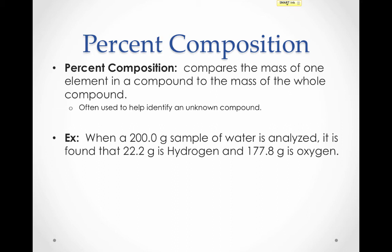Here's an example. When a 200 gram sample of water is analyzed, it is found that 22 grams of that sample is hydrogen, and 177.8 grams of that sample is oxygen. We can calculate the percent composition here. Let's start with hydrogen. We know that 22.2 grams of this sample are hydrogen. That's the mass of the part. The whole sample has a mass of 200 grams. That's the mass of the whole. And of course, like any percentage, we want to multiply by 100. Do the math, and you find that this compound is 11.1% hydrogen.